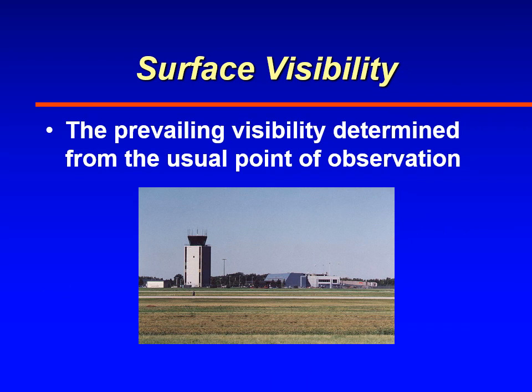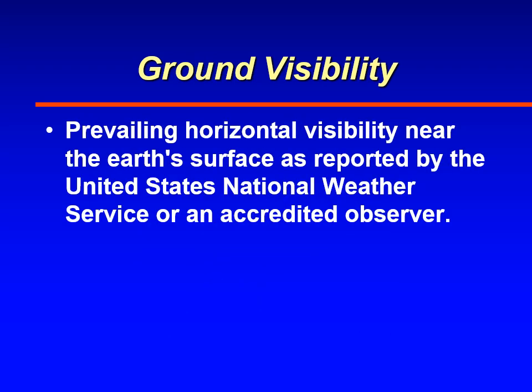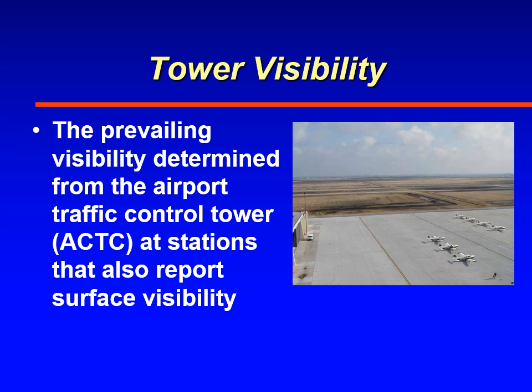Surface visibility is basically the visibility reported from the usual point of observation, whether it be ASOS, AWOS, or augmented with humans. Ground visibility is basically the prevailing visibility reported at the airport by a certified weather observer, and it's typically the same as surface visibility — just a slightly different take. Tower visibility is the prevailing visibility determined from a control tower at airports that also make surface observations.